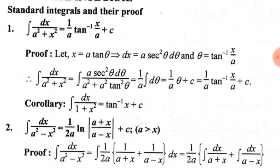That means ∫dx/(a² + x²) = (1/a)·tan⁻¹(x/a) + C, where C is the integral constant. We can also write a corollary: ∫dx/(1 + x²) = tan⁻¹(x) + C, where C is the integral constant.